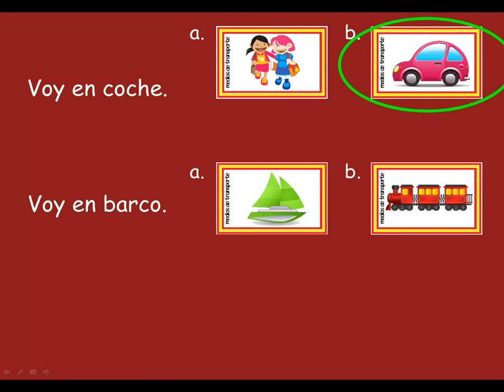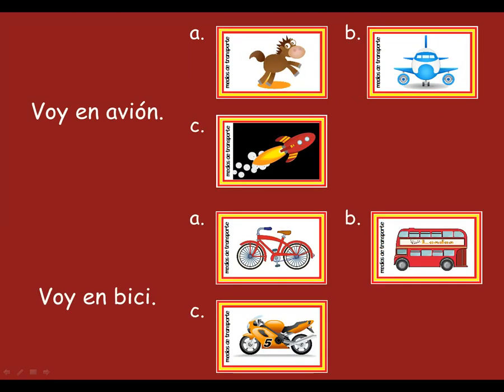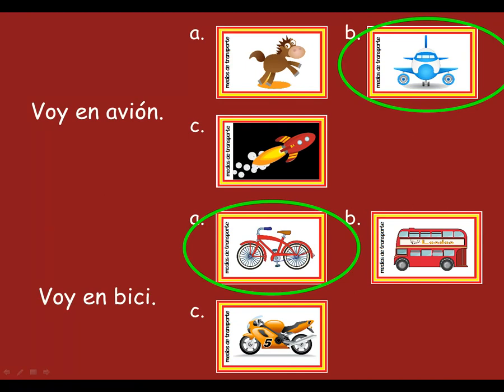Then the second one: voy en barco — which one is that going to be, A or B? That's right, it's A. Let's make it a bit more tricky — you've got three to choose from this time. The first one says voy en avión — will it be A, B, or C? Point to the right one. You've got it — it's picture B. And the last one, three to choose from again: voy en bici — is it A, B, or C? Point to the correct picture. That's right, it's picture A. Well done.